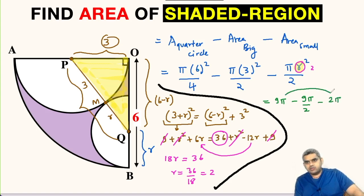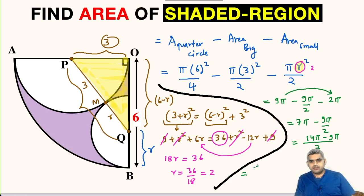So we can subtract 2π from 9π. So we will get 7π minus 9π divided by 2. We will take LCM as 2. So this will be 14π minus 9π which is 5π. So this will be equal to 14π minus 9π is 5π divided by 2 square units. So the area of this shaded purple region will be 5π divided by 2 square units.